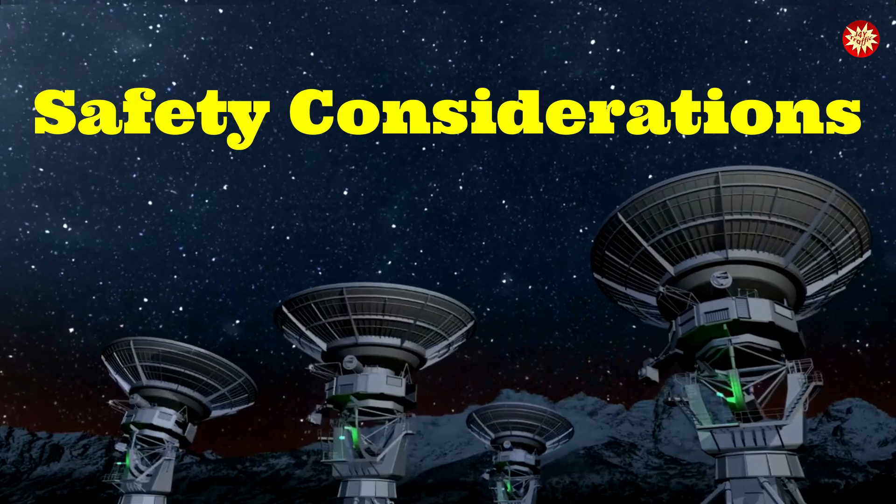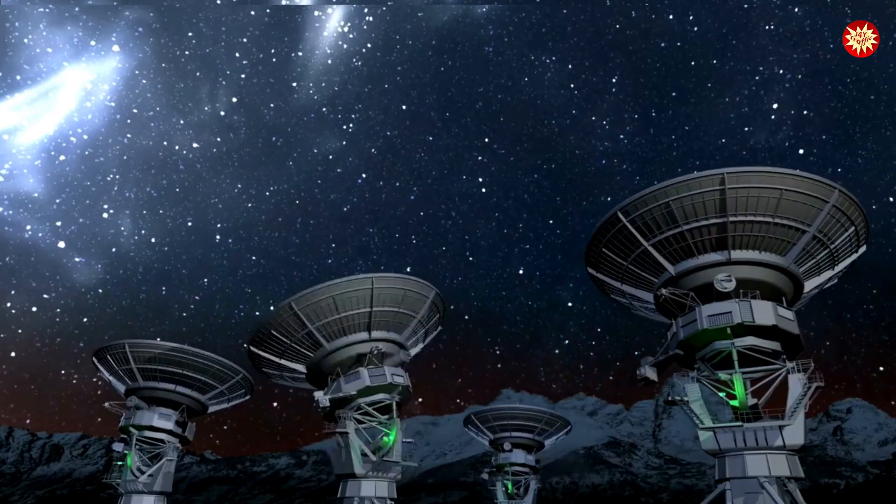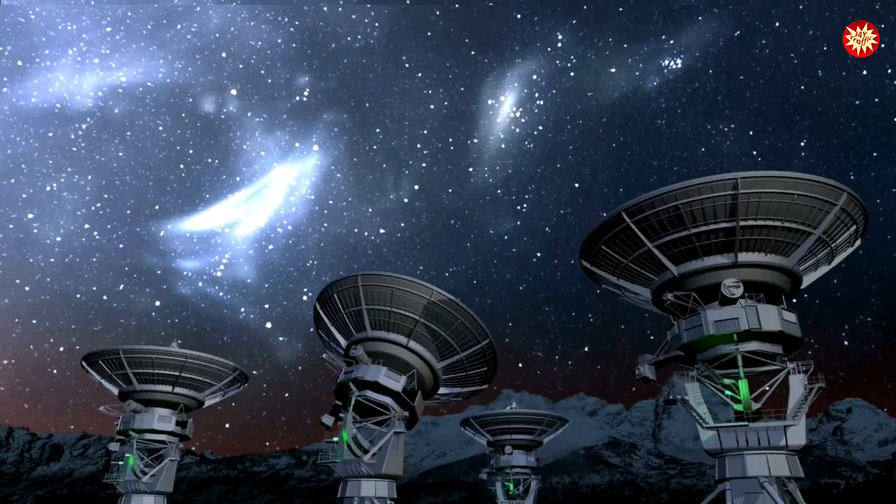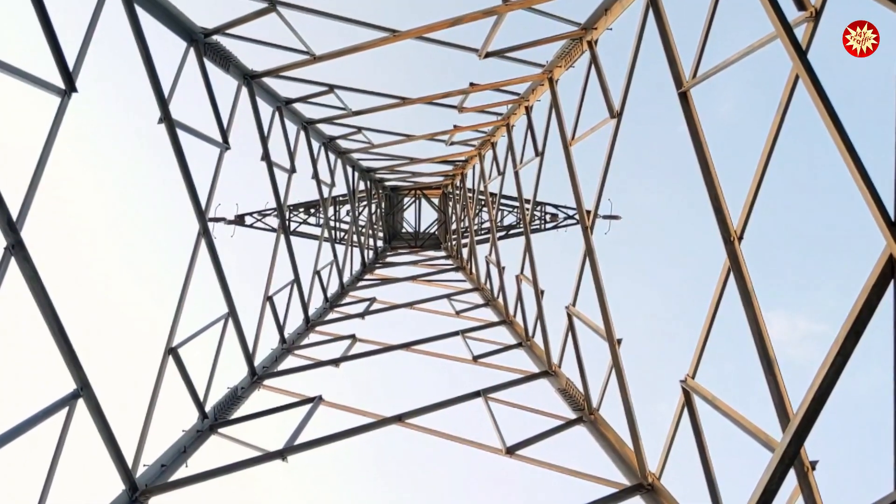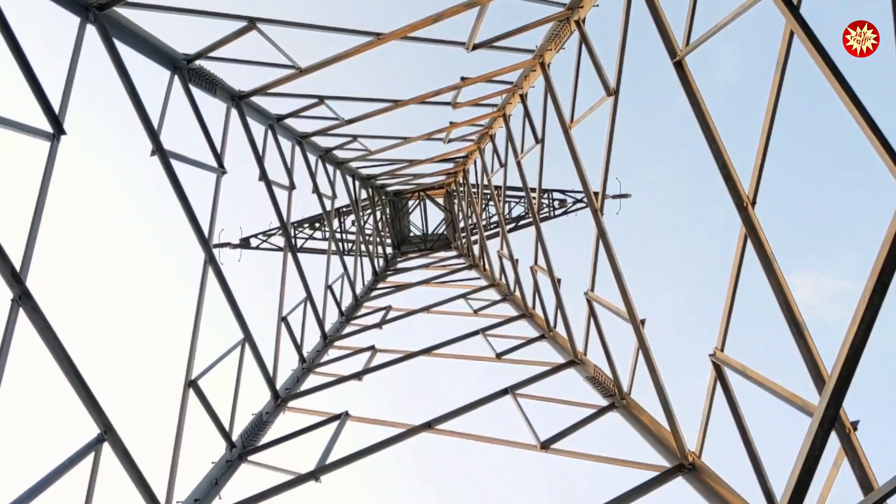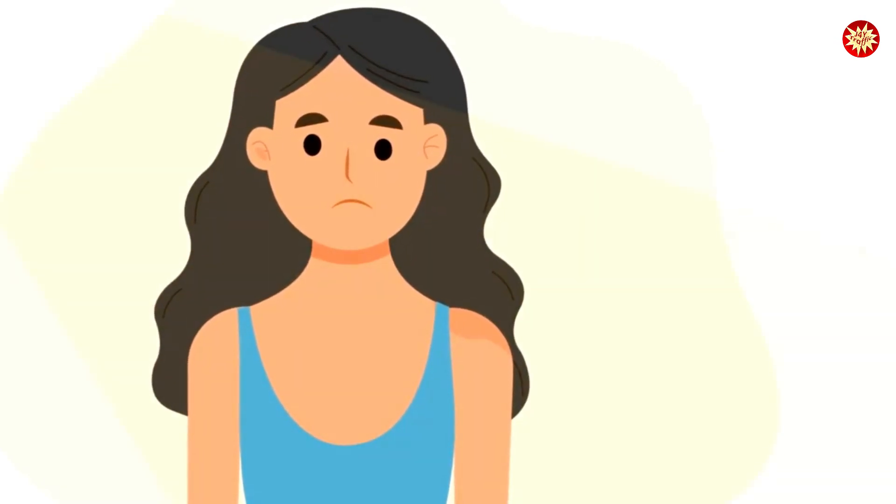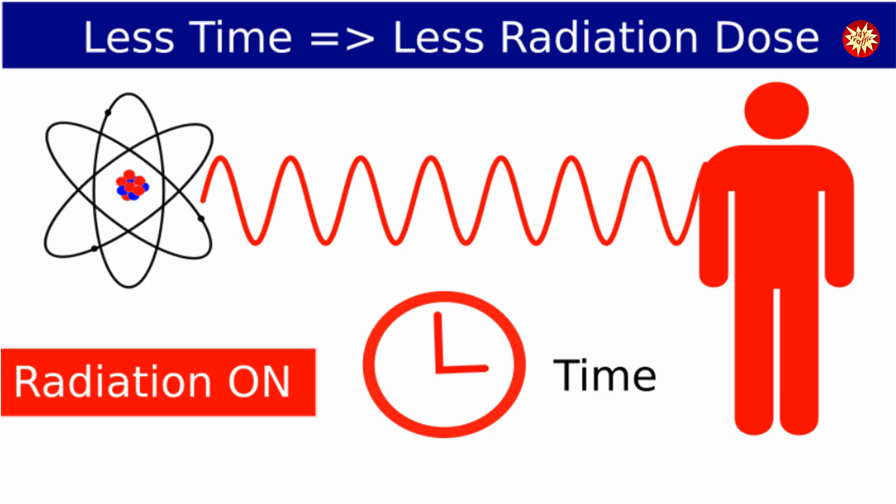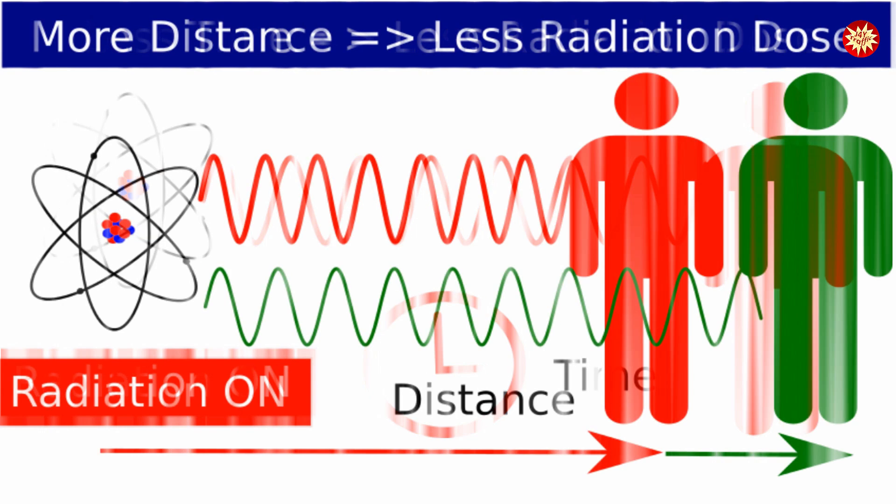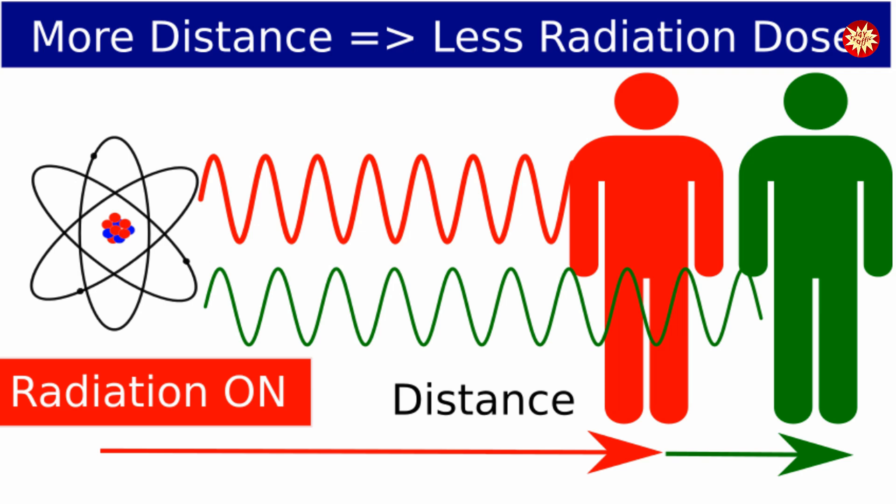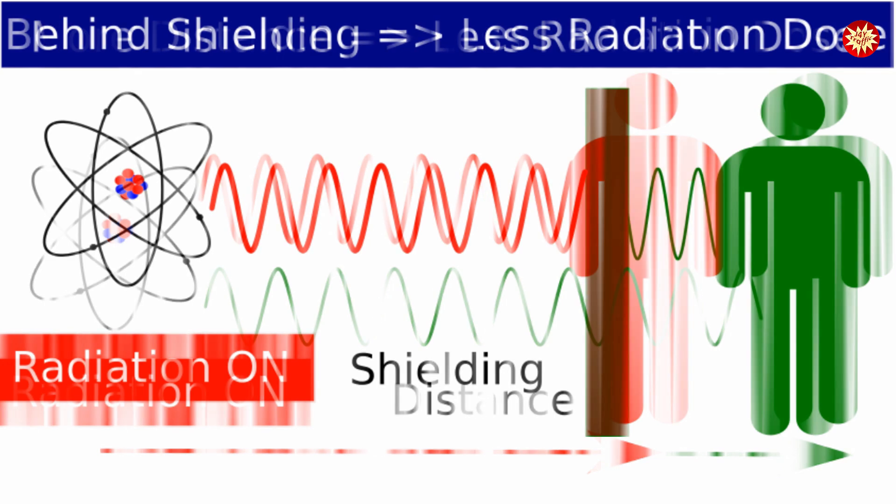Non-ionizing radiation may not ionize atoms, but it can still pack a punch when it comes to health risks. Think tissue heating from high-intensity exposure like microwaves or the skin burns and cancer risks from UV rays. To stay safe, remember these key safety protocols. Keep your distance from radiation sources, gear up with protective equipment like UV-blocking gear, and limit your exposure time.